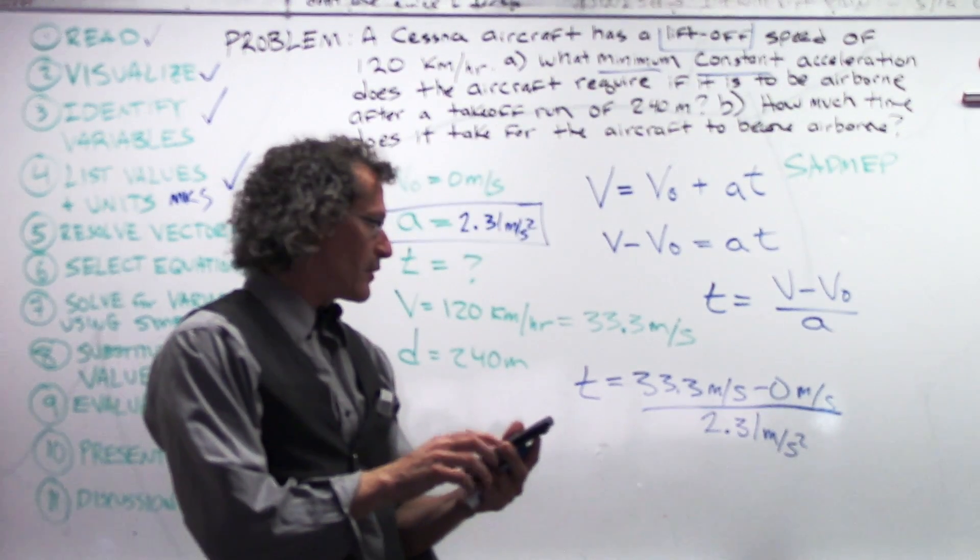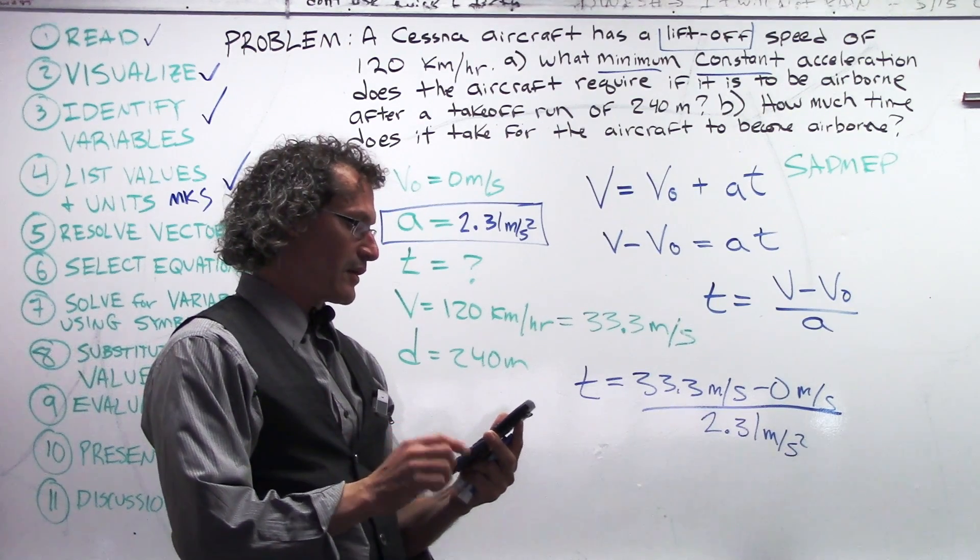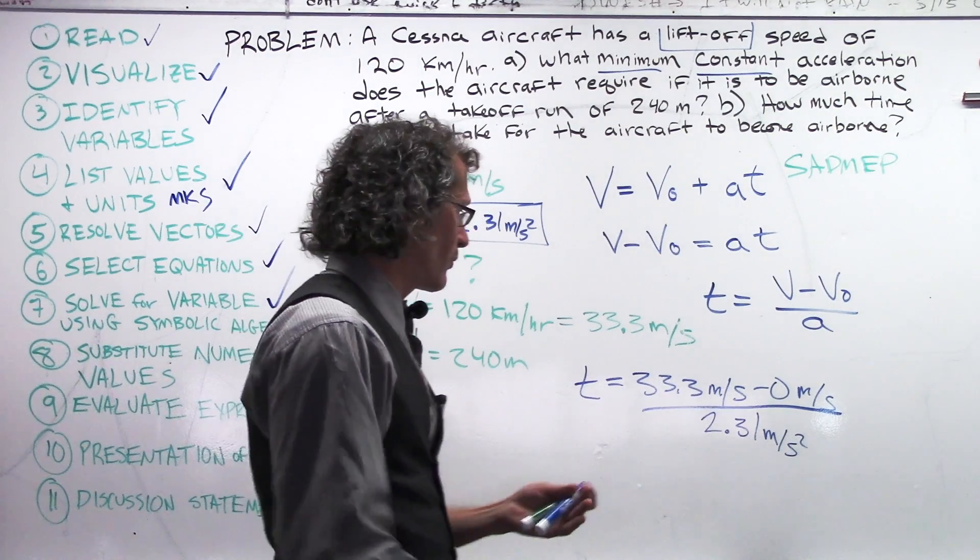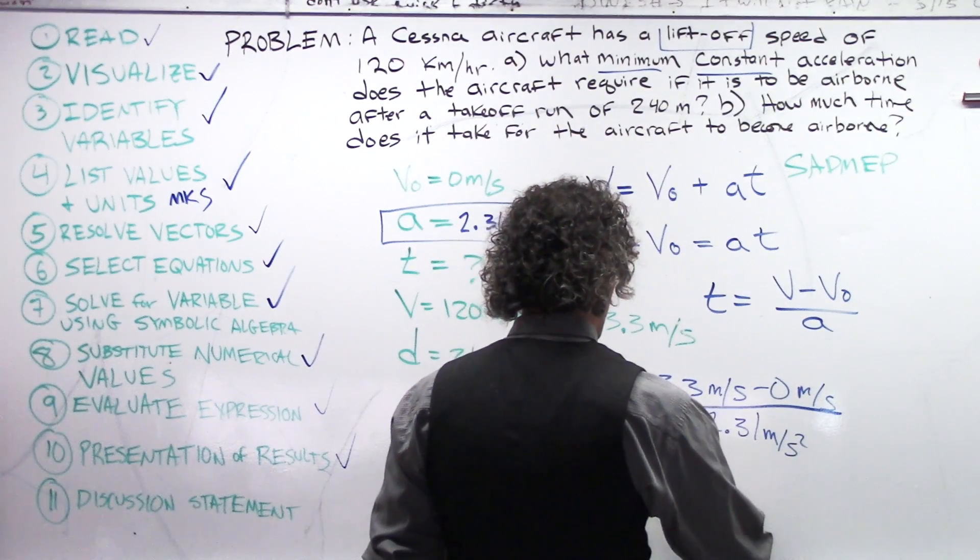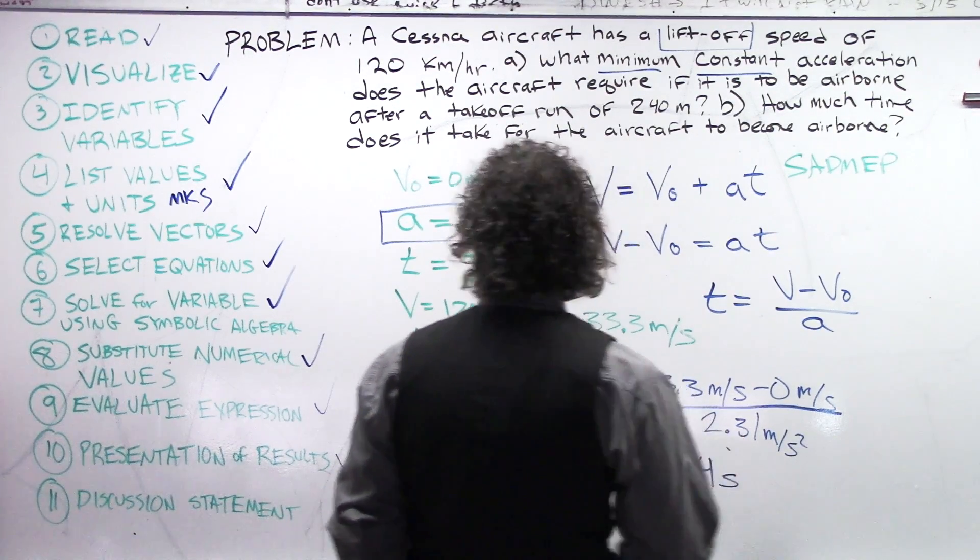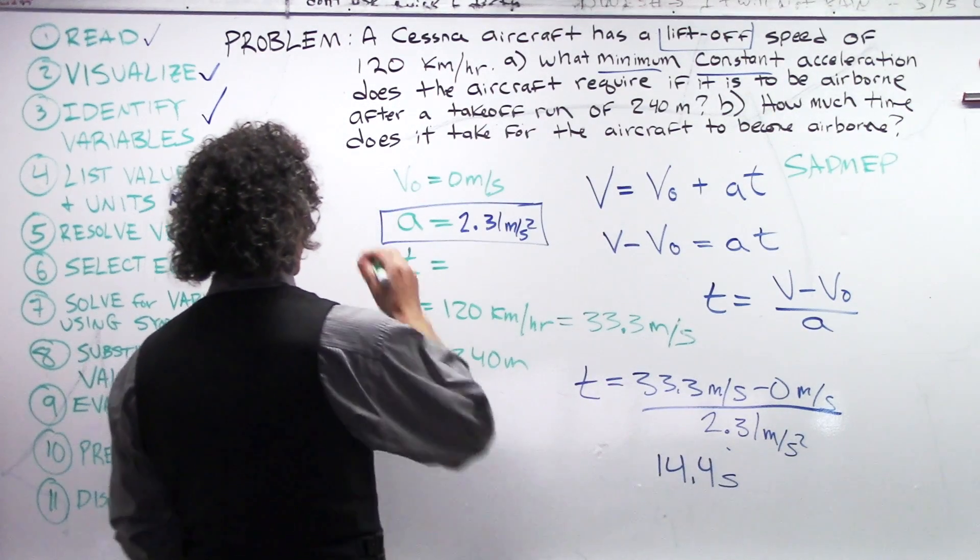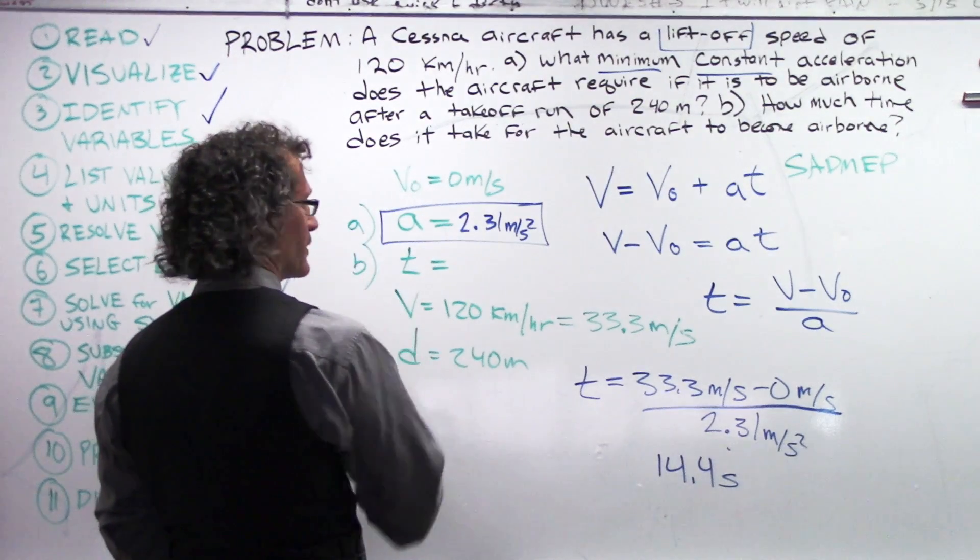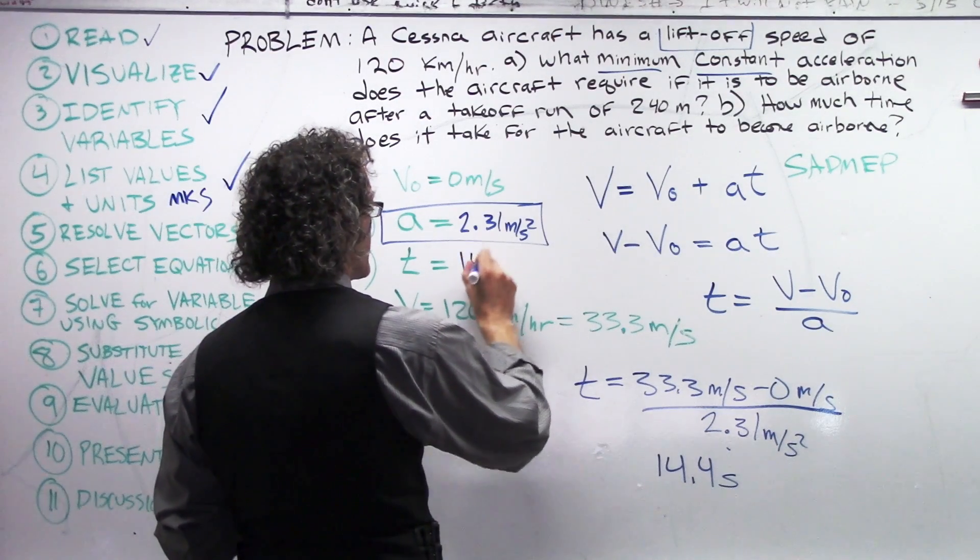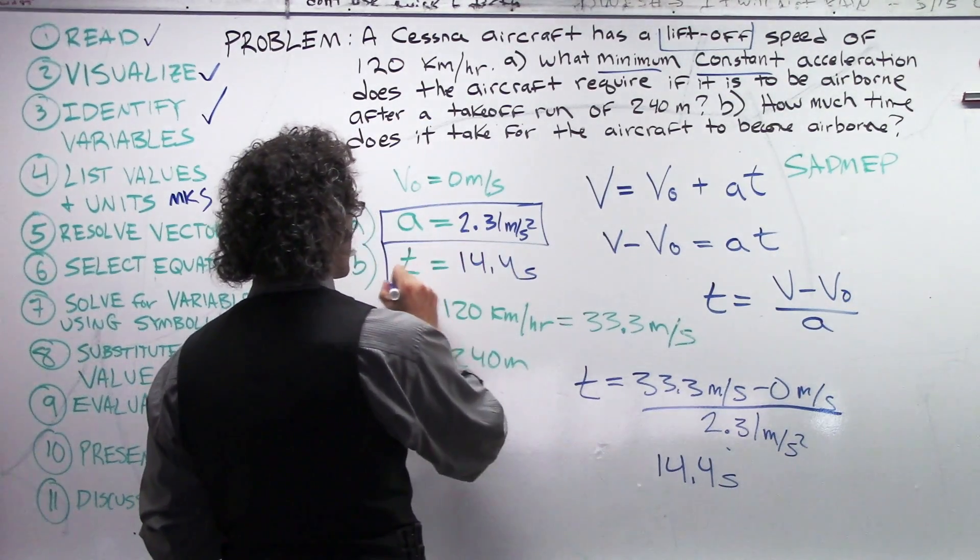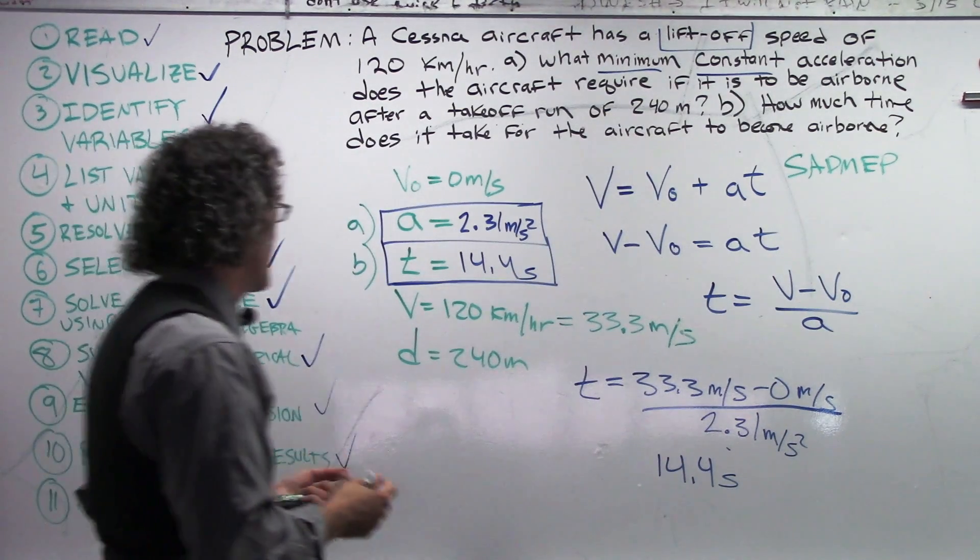What does this become? We have 33.3 divided by 2.31 and the units. So, it's about 14.41. Well, 14.41 we'll call it. So, 14.4 seconds. So, I'm going to write that down over here as well. Now, this was for, ironically, part A to get A. Part B is T equals 14.4 seconds. 14.4 seconds. I'm going to box this guy in. Here he goes. Beautiful thing. Excellent.